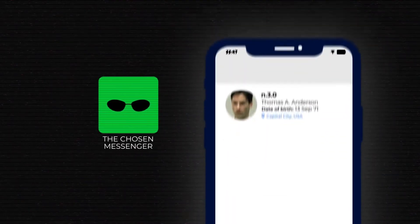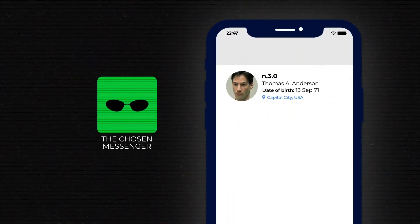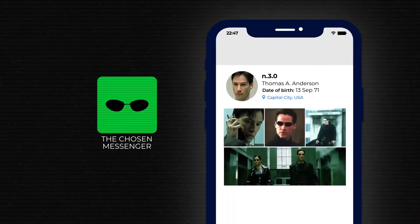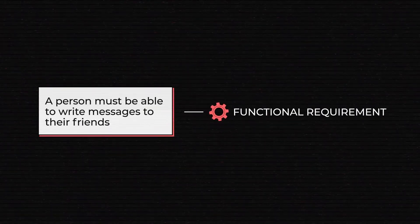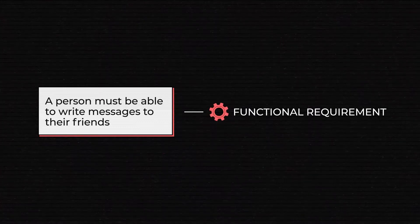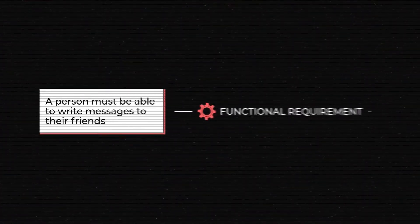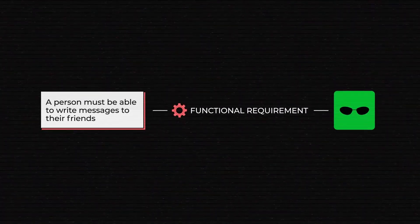For example, a social media app: users can create a personal profile, upload photos, write posts or messages. A person must be able to write messages to their friends is our functional requirement, since it points out the specific needs of people and features that can satisfy them — for example, a chat.